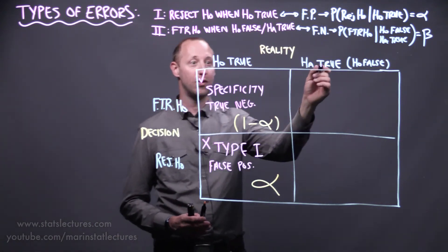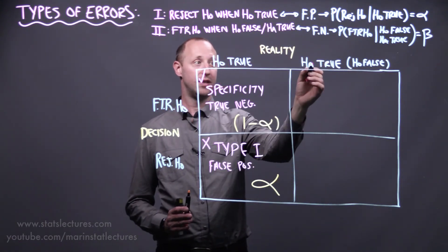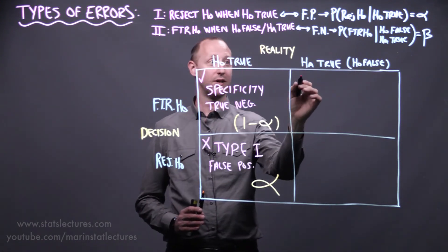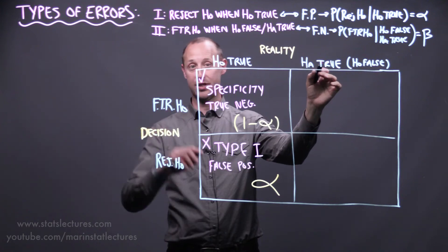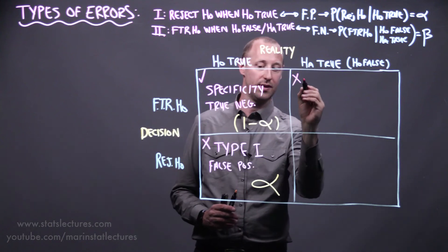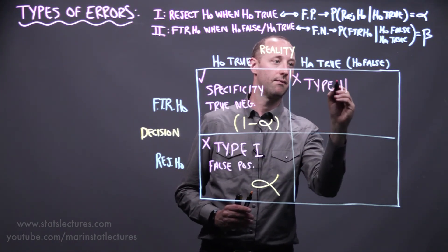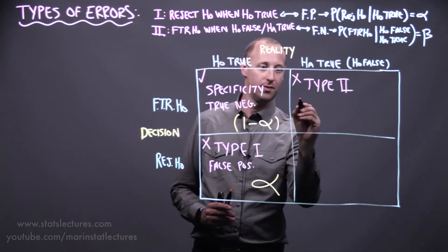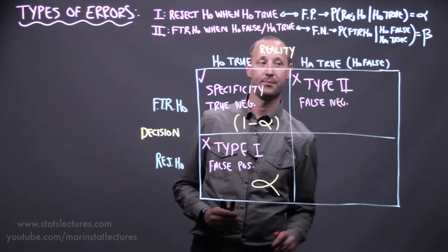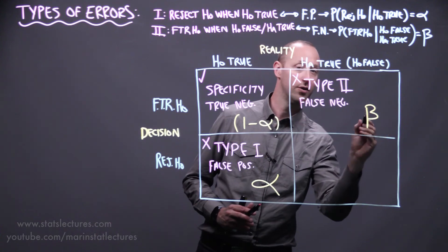Now in the case where the alternative hypothesis is true: if the null is false and the alternative is true, but we fail to reject the null, we've made an error — that's what we call the Type 2 error, also known as a false negative. The probability of this happening we denote with beta.